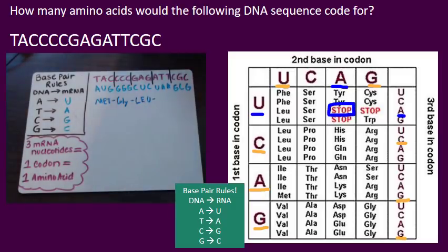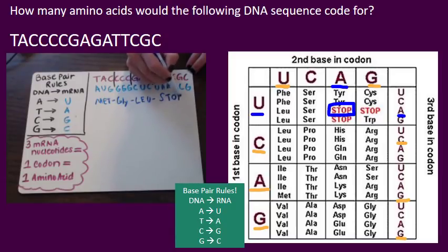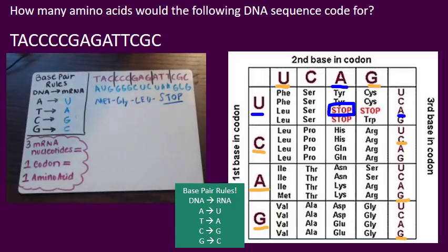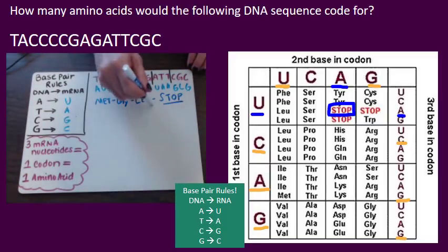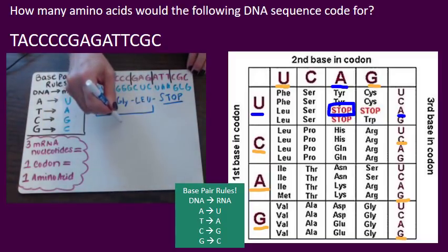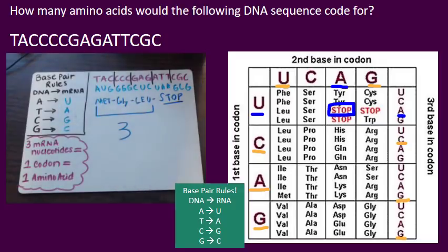Then we have UAA — and this codes for a stop codon, so we stop right there. That is the end of our amino acid sequence. Once we hit the stop codon, that tells the ribosome we're done making that protein and it lets it go and fold up to become the protein. So for this question, how many amino acids would the following DNA sequence code for? It really only codes for three amino acids.